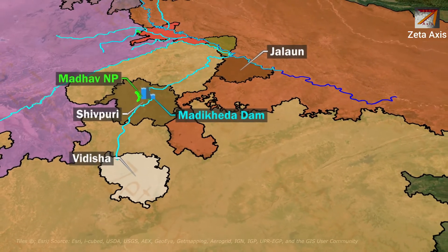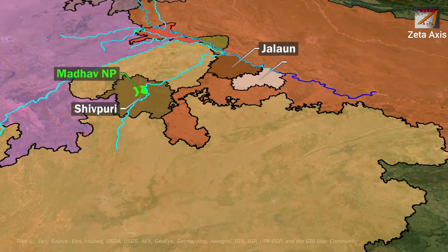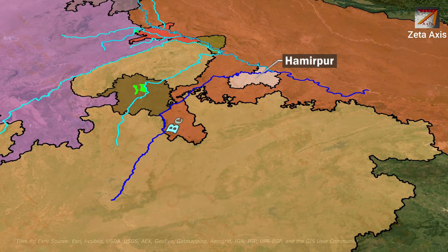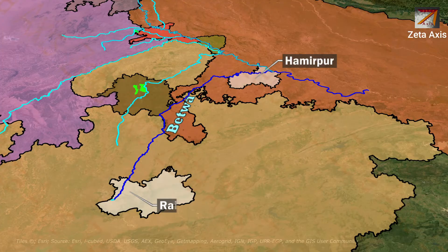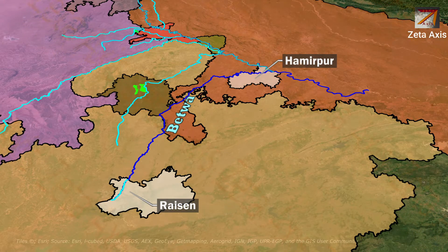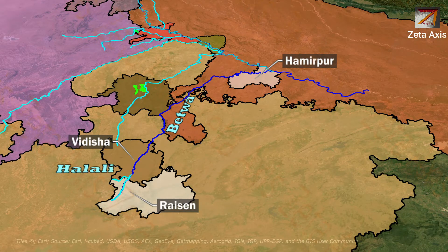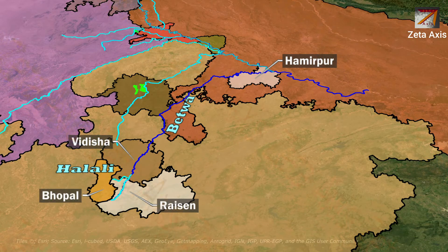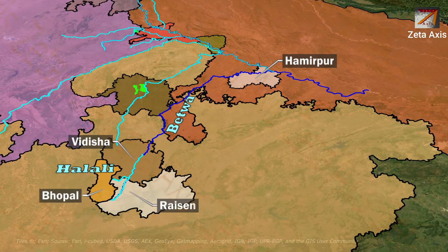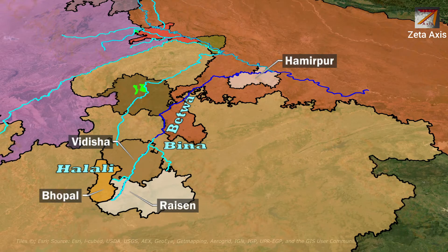The Yamuna river from Jalaun flows into Hamirpur where it meets the Betwa river. The Betwa river originates from the Vindhya range in Raisen district of Madhya Pradesh. From Raisen, the river enters Vidisha where it meets the Halali river. The Halali river originates near Bhopal, and a Halali reservoir has been built on it. The Halali river joins the Betwa river in Vidisha. Within Vidisha, the Beena river also joins the Betwa river.